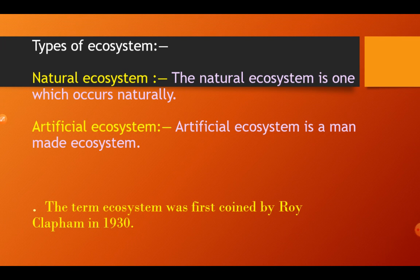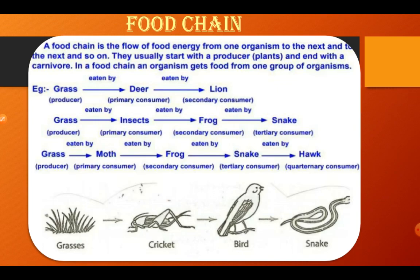The ecosystem can be divided into two types: natural ecosystem and artificial ecosystem. The natural ecosystem is one which occurs naturally. It can be further classified into terrestrial ecosystem, which is on land, and aquatic ecosystem, which is in water bodies. Artificial ecosystem is a man-made ecosystem. The term ecosystem was first coined by Roy Clapham in 1930.